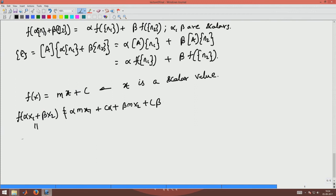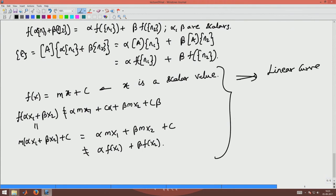What is this equal to? This is equal to m·(αx₁ + βx₂) + c which is α·mx₁ + β·mx₂ + c. This is not equal to α·f(x₁) + β·f(x₂). So this is not a linear function. C has to be equal to 0 for function to be linear.